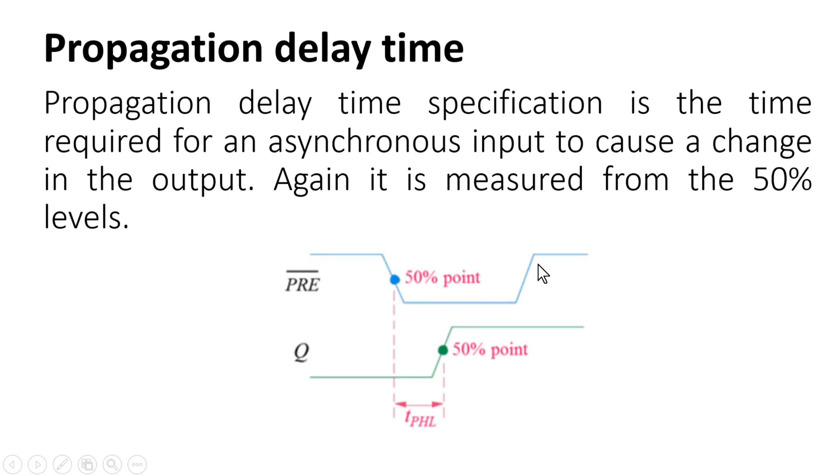For example, in this case, I have taken this preset signal and this is Q output. Again, it is measured from 50% levels. That means it is the time when preset is at the 50% point until Q gets a transition to the 50%. And this much time is called the propagation delay time for an asynchronous input.